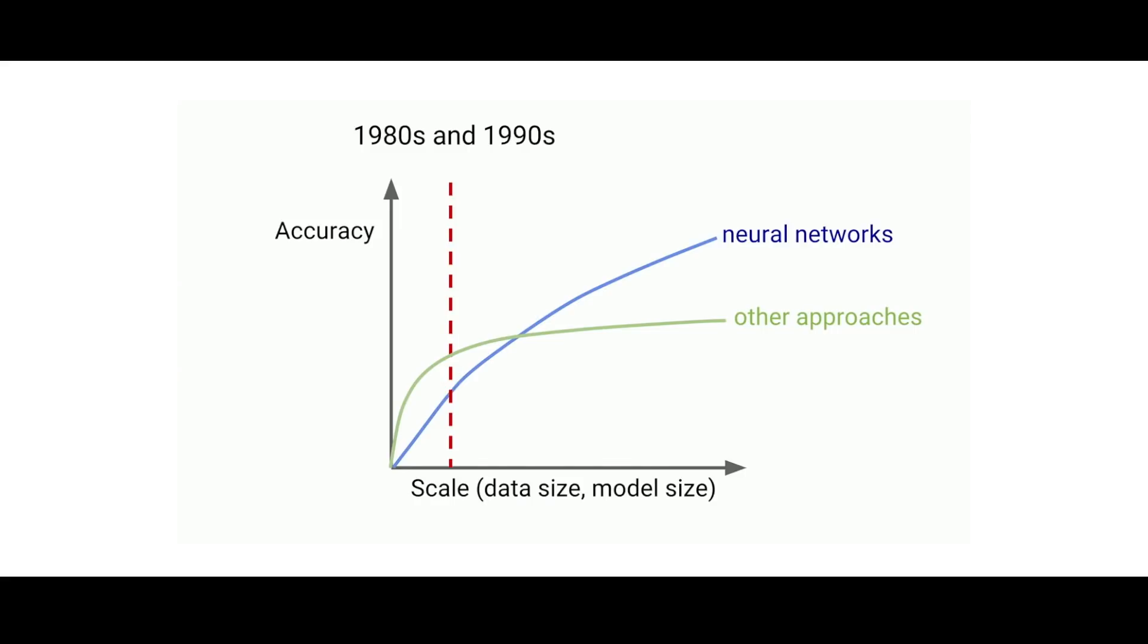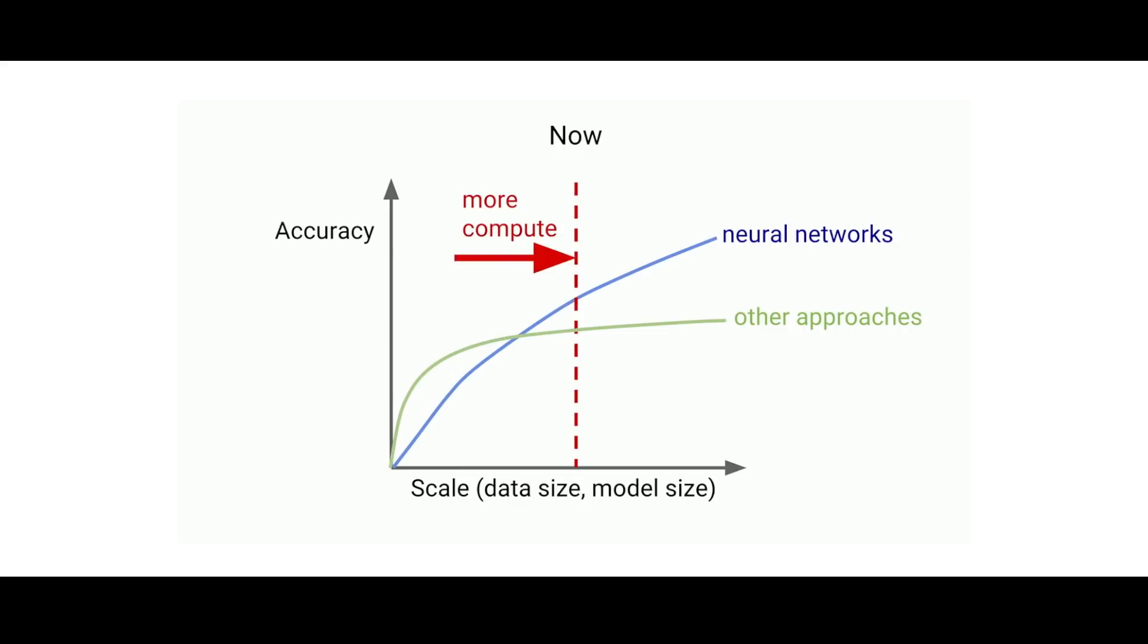One explanation for this is that neural networks are really good at scale. They're really good when you have a lot of data or when you have large models. So as we move with more compute power, what we find is that neural networks end up winning out over other technologies.